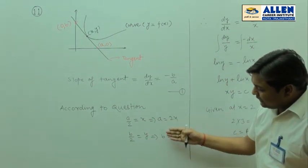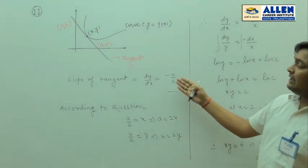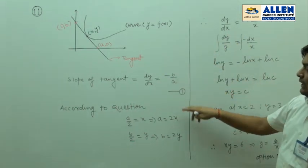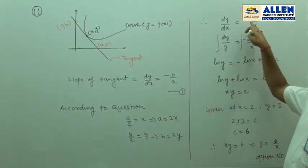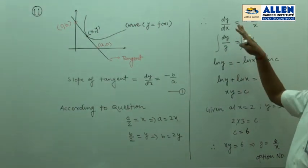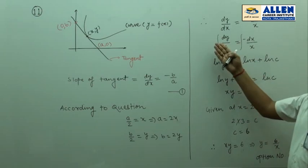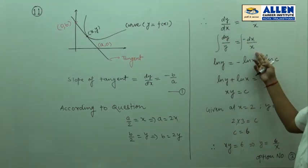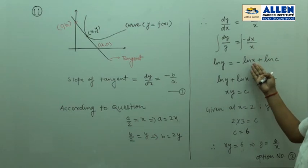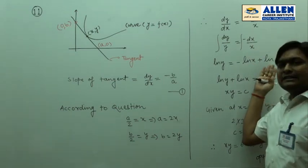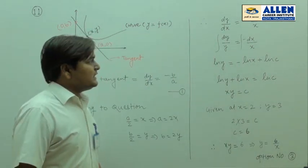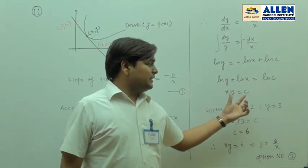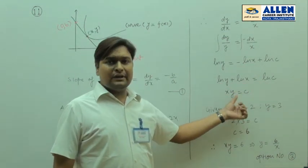When we substitute the values of a and b in equation number 1, we get dy/dx = −(2y)/(2x) = −y/x. Now, integrating both sides: ∫dy/y = ∫dx/x gives ln y = −ln x + ln c, so ln y + ln x = ln c, therefore x·y = c.